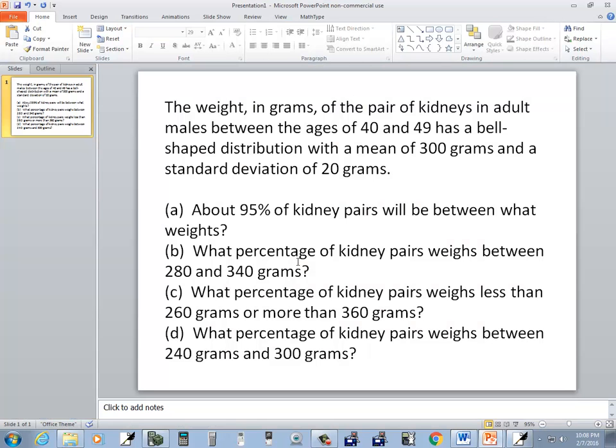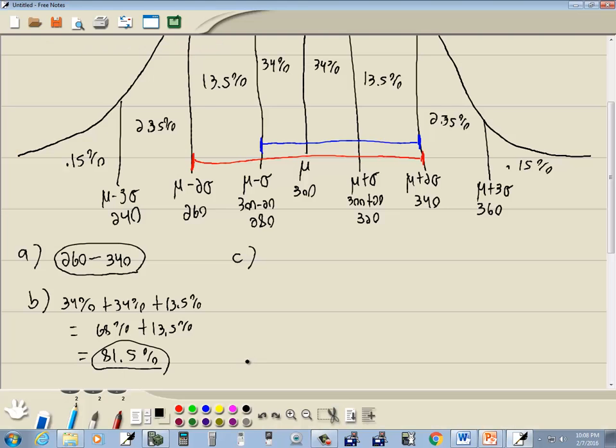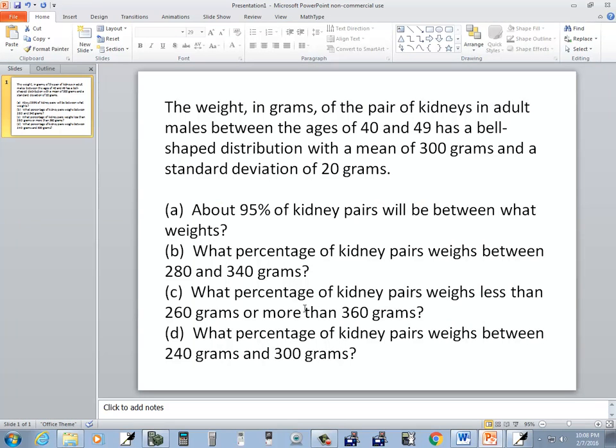Now C, what percentage of kidneys weigh less than 260? Less than 260, you'd be going this way. So we'd have 2.35 plus 0.15, weigh less than 260 or more than 360.